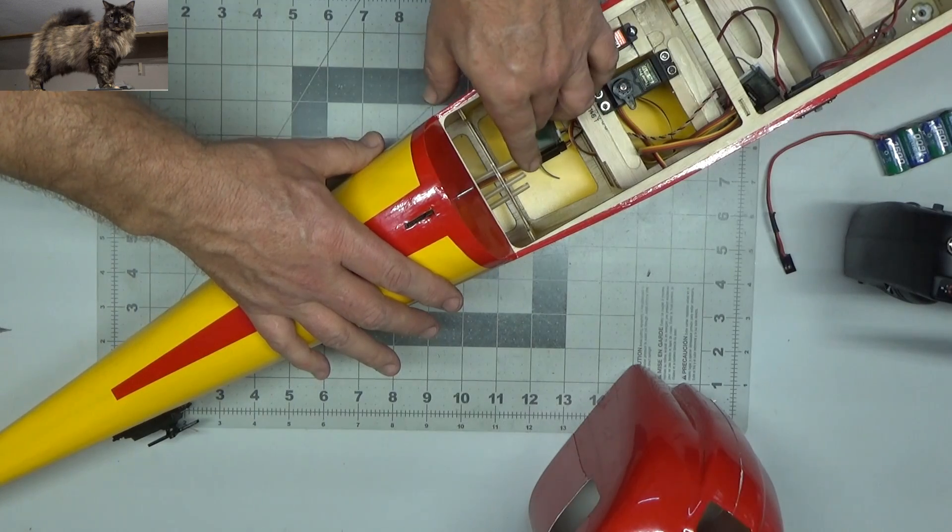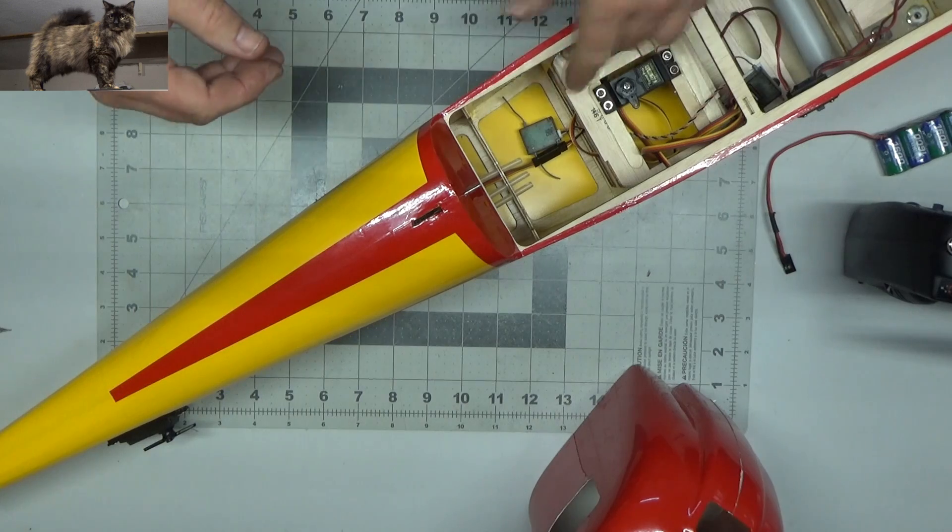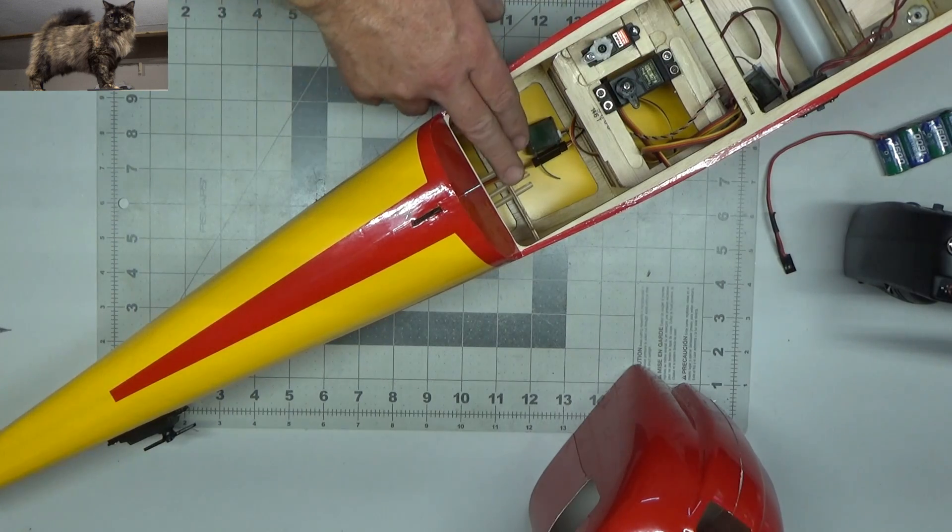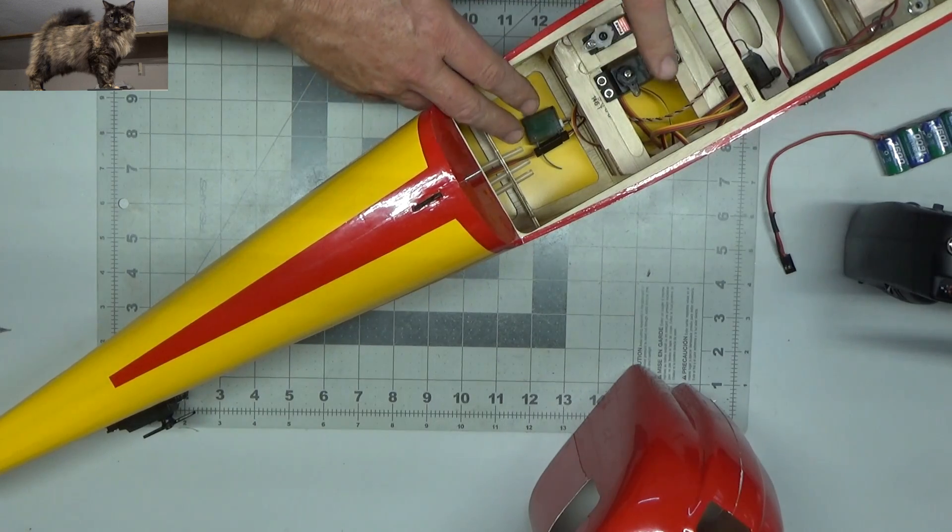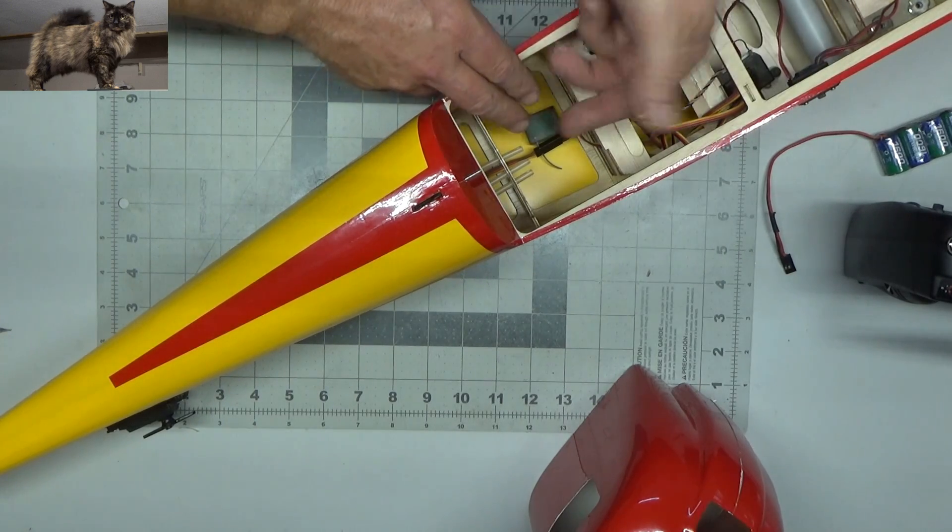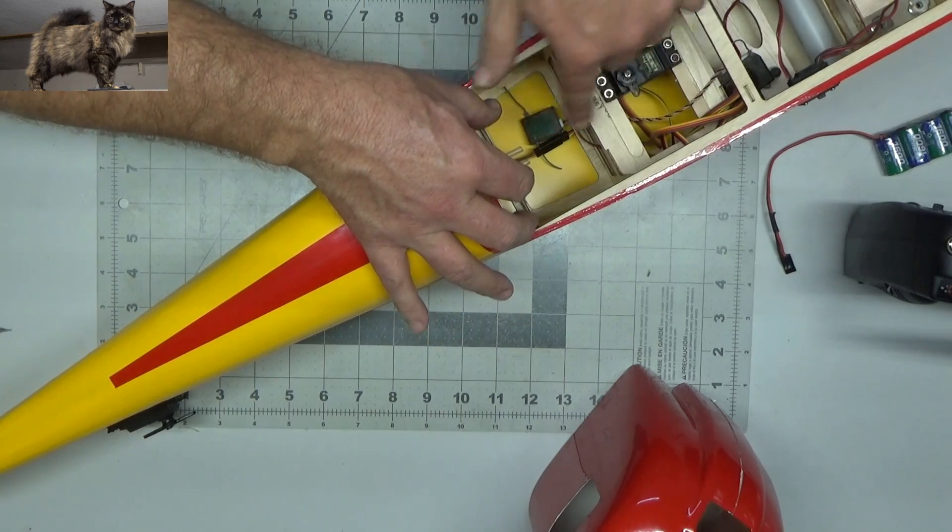But I noticed that they had a Y setup for the elevator, and one of the things about the hardware that comes with these kits that I really do like is, when they have a Y setup like that, you can drive it with one servo, you don't have to have two. They've got this little metal block that has three holes in it.